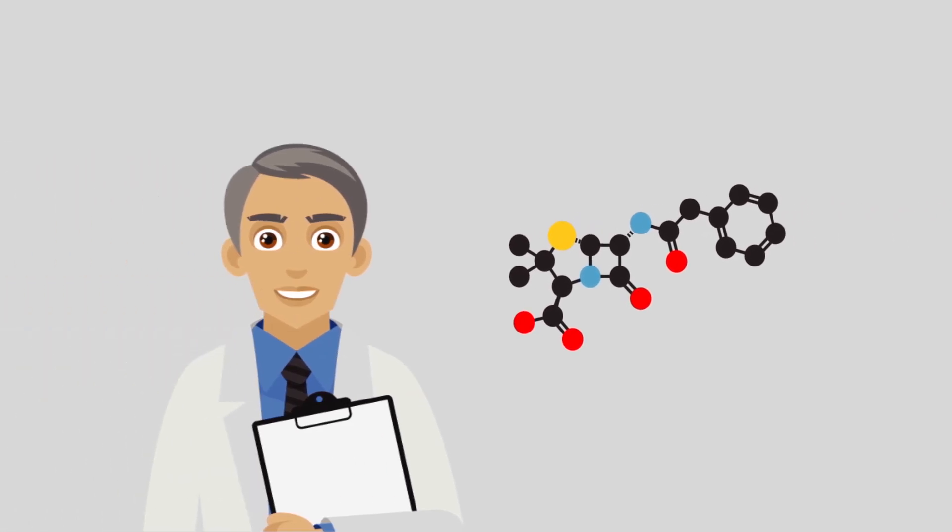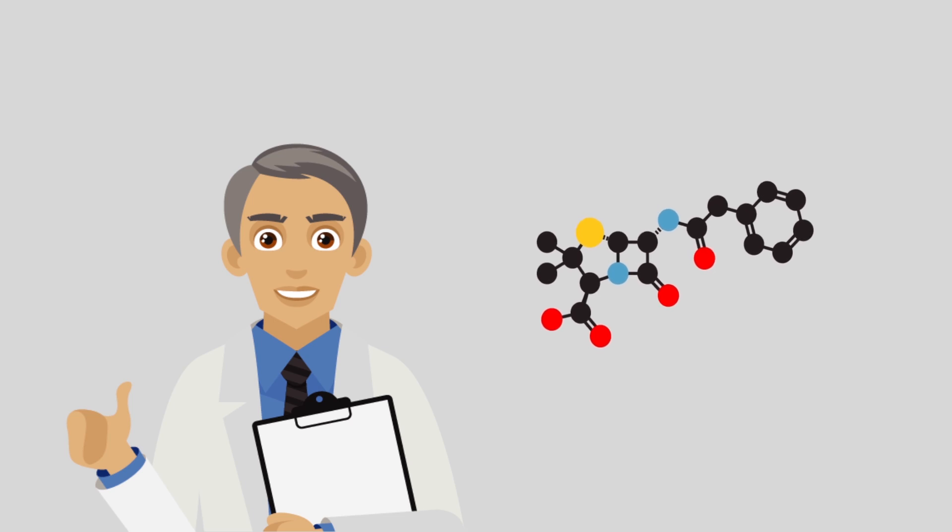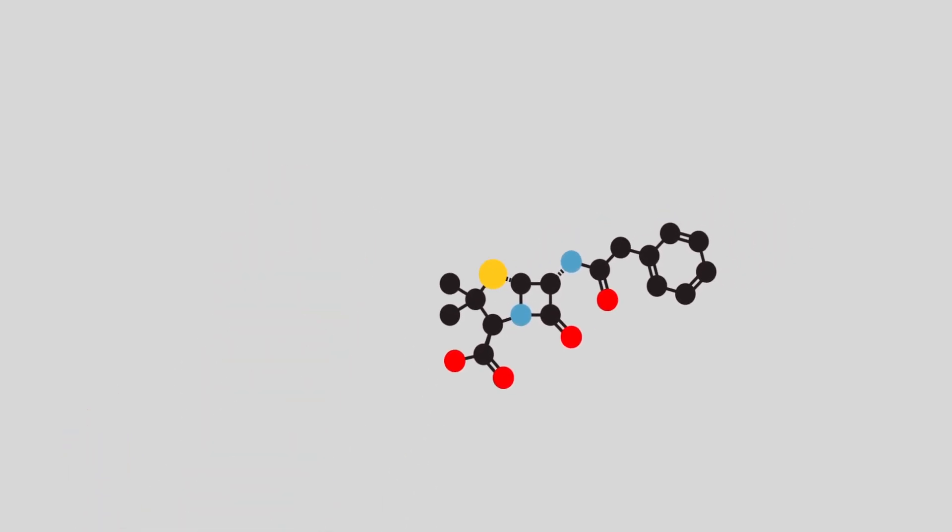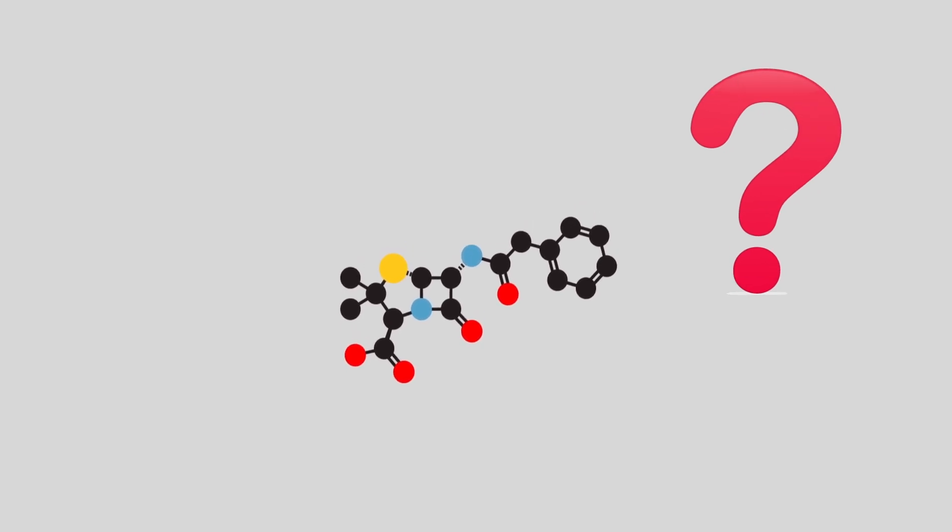Alexander Fleming discovered the first antibiotic in 1928. Unknown to him at the time, his findings would quickly revolutionize the whole field of medicine, forever. So we ask, what is an antibiotic and how does it work?